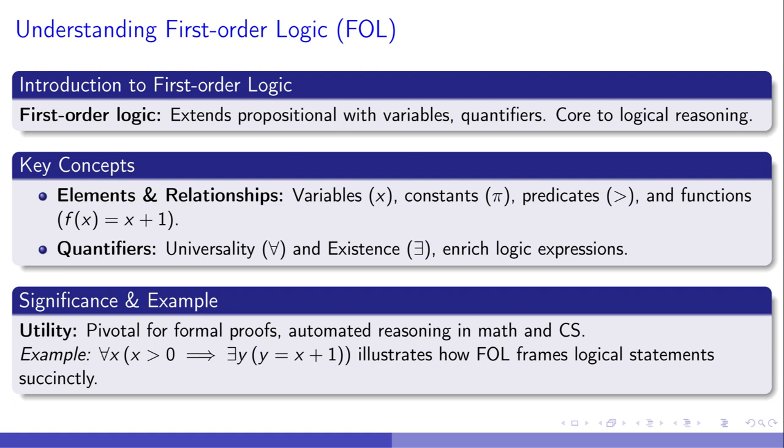Expanding on Prolog and predicate logic, first-order logic (FOL) introduces variables, constants, and quantifiers, enhancing our logical toolbox. Imagine variables as open slots in a puzzle, constants as the specific pieces, and quantifiers telling us if all pieces fit or just one. For example, for any positive number X, there's a successor Y, beautifully captured as ∀X(X > 0 → ∃Y(Y = X + 1)). This isn't merely elegant, it's foundational in creating algorithms that drive modern computing, from solving equations to optimizing searches. As we delve deeper, observe how FOL's precision shapes our understanding of logical structures in computing and beyond.